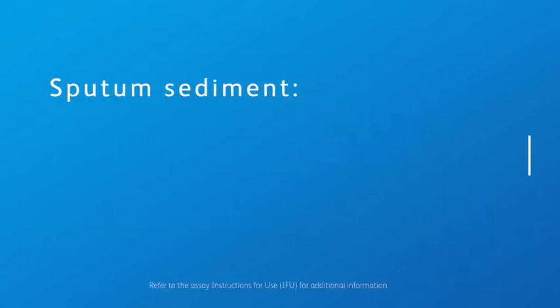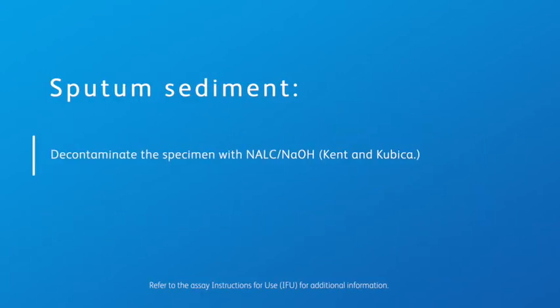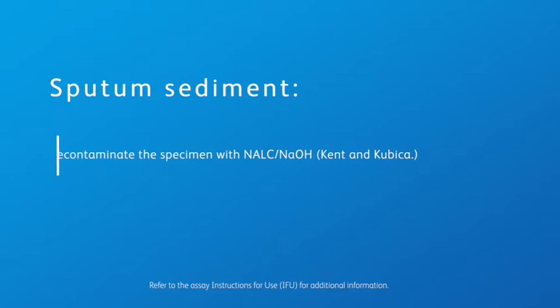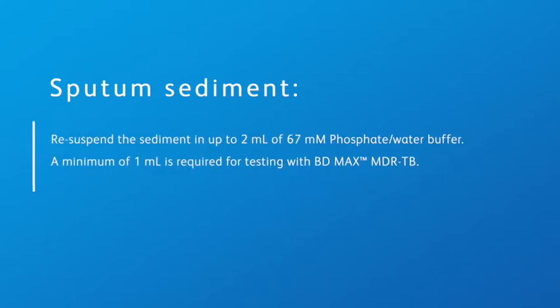To prepare a sputum sediment, decontaminate the sputum specimen with NALC-NAOH according to the method of Kent and Cubica. Resuspend the sediment in up to two milliliters of 67-millimolar phosphate water buffer. A minimum of one milliliter is required for testing with BD-MAX MDR-TB.